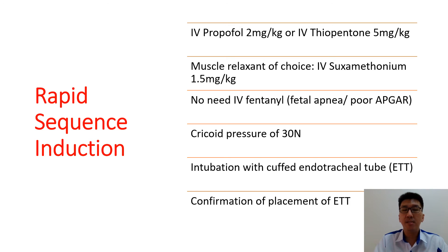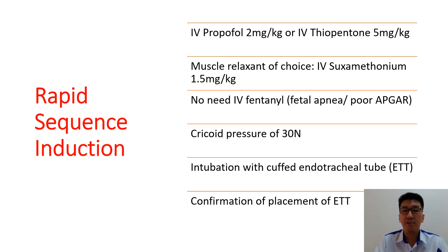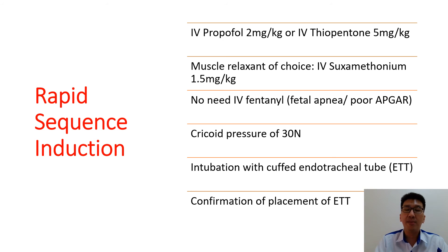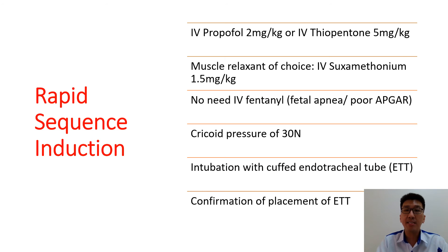Rapid sequence induction is usually applied to patients undergoing either elective or emergency lower segment Caesarean section for GA, which includes intravenous propofol 2 mg/kg or thiopental. Muscle relaxant of choice is usually suxamethonium at 1.5 mg/kg, and we generally avoid fentanyl because of fetal apnea and poor Apgar scores. After rapid administration of these drugs, an assistant should perform cricoid pressure of 30 Newtons on the cricoid cartilage to avoid aspiration pneumonitis. After approximately 45 seconds, we intubate with a curved endotracheal tube with the help of the video laryngoscope, then confirm placement by auscultating the lungs at the bases and apex.